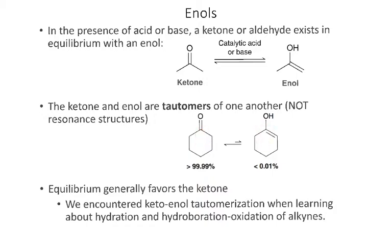A common mistake is to think of the ketone and enol tautomers as different resonance structures, but they're not. To be two different resonance structures, all we can move are electrons. In this isomerization, we're actually moving the hydrogen — from the alpha position to becoming a hydrogen on the alcohol. So this is not resonance; it is an isomerization.